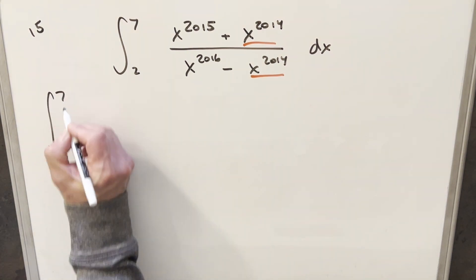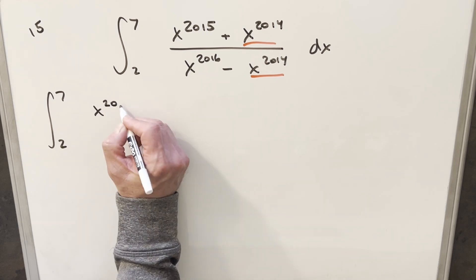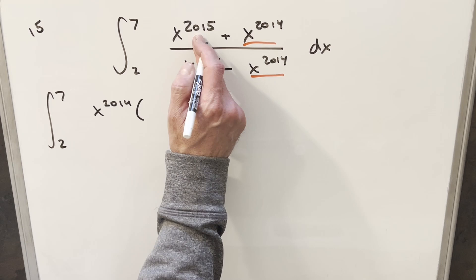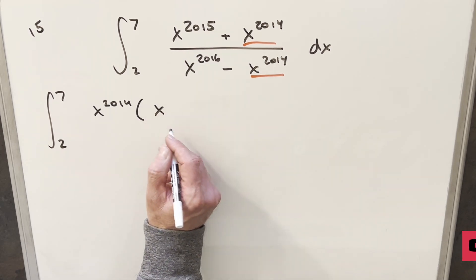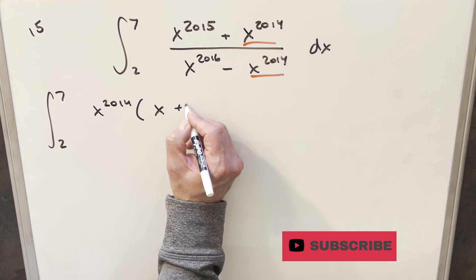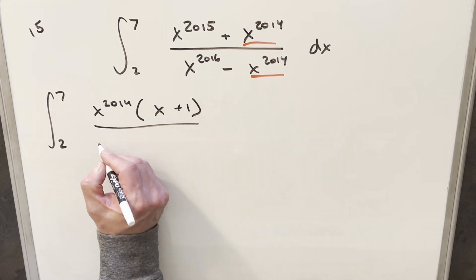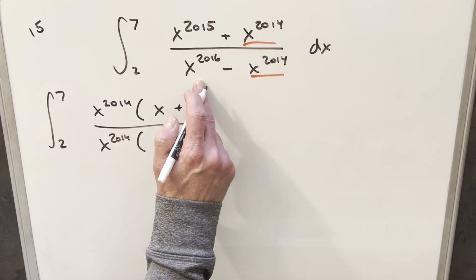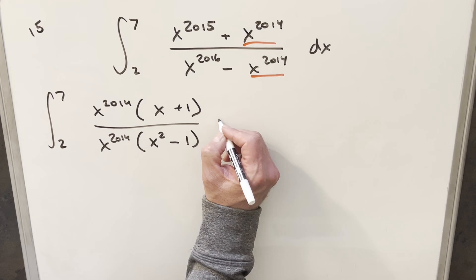So we'll rewrite this. I'll factor x^2014 out of both of these. The numerator becomes x plus 1. Doing the same thing in the denominator, factoring out x^2014, this term gives me x squared, and we have minus 1.